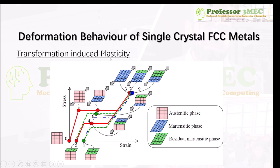The next mechanism is transformation-induced plasticity. Here there are no dislocations or twinning, but rather the crystal structure transforms to a new phase. For example, in steels the austenitic phase can transform into a martensitic phase — FCC changing into an orthorhombic structure — causing transformation-induced plasticity. Similarly, in metastable beta titanium alloys, the BCC beta phase can transform into an orthorhombic or body-centered tetragonal martensite. Today's video focuses on slip-based plasticity; twinning and transformation-induced plasticity will be left for future topics.